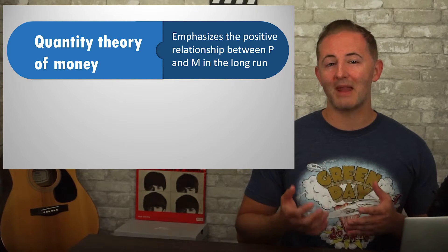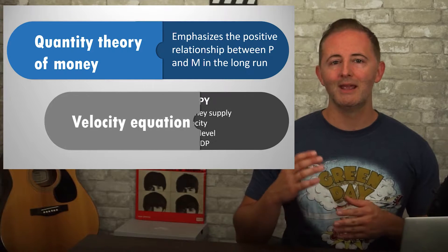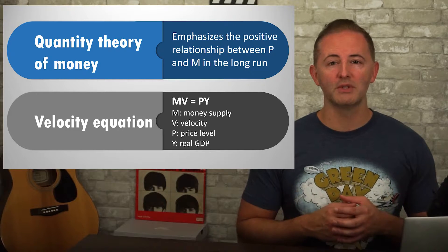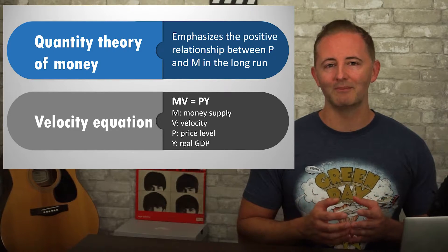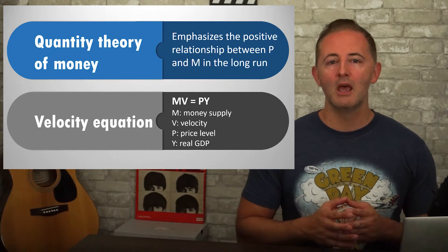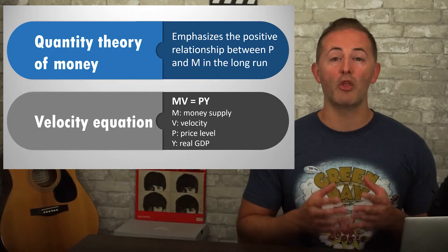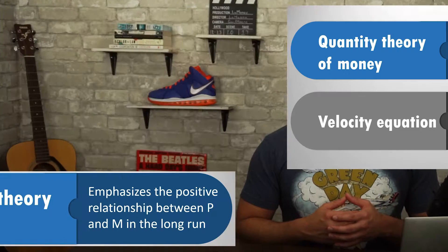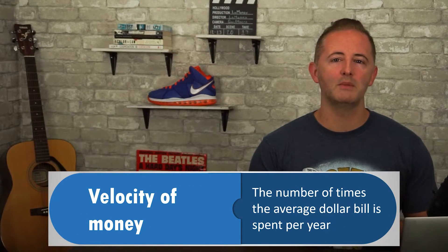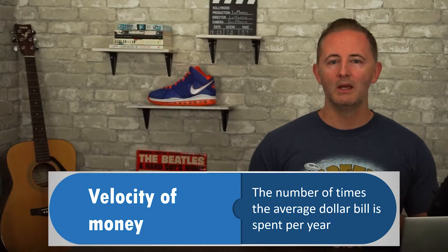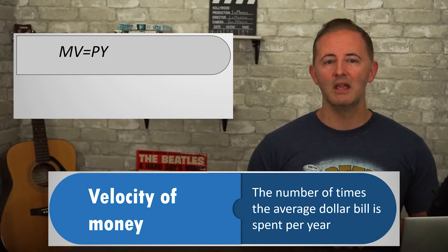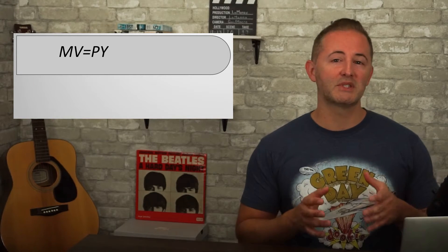Allow me to illustrate this mathematically with the velocity equation: M times V equals P times Y. M is the money supply, V represents the velocity of money, P is the price level, and Y is real GDP. Velocity of money is the only new concept here, and it refers to the number of times the average dollar bill is spent per year. Let's step back and look at what this equation — actually its identity — is trying to tell us.